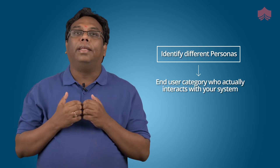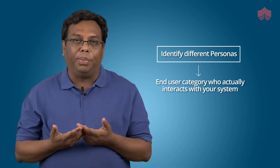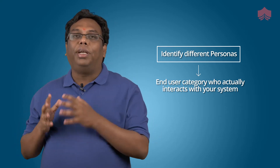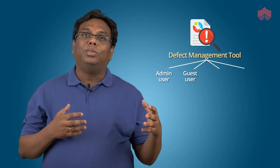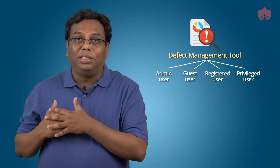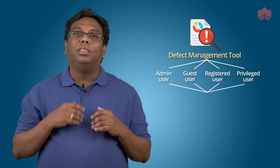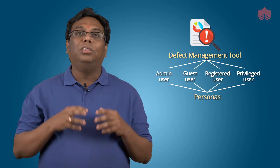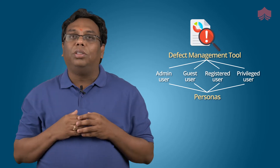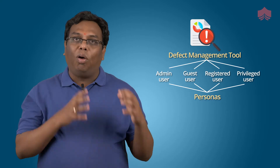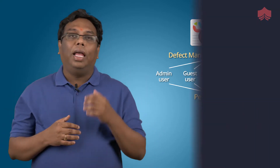You first have to identify different personas. Personas are end user categories who actually interact with your system that you are developing. For example, if you are developing a defect management tool, you will have an admin user, a guest user, registered users, and privileged users. Each of these categories is called a persona. You need to first identify the personas which actually interact with your system, list them, and capture all the requirements in terms of how these personas actually interact with your system.